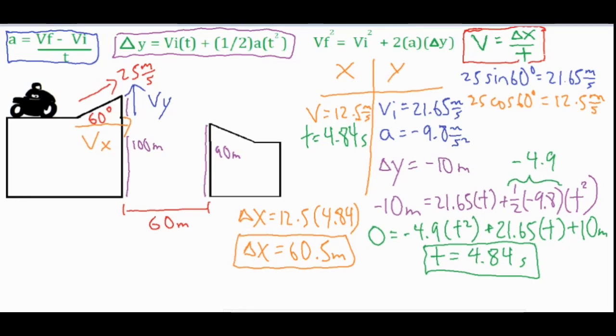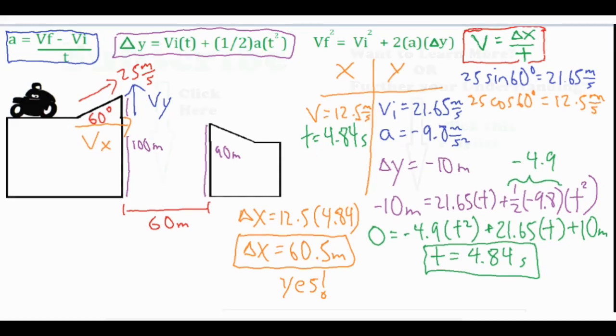Now this time they do actually exceed this 60 meter gap. Our delta x is going to be a little bit greater, so this one they do land it, they do make it across. The difference in this one was we have to solve for time a little bit differently and use this equation which causes a quadratic or something that you have to graph to find this different time. The time is a little bit longer because the biker does drop that additional 10 meters, so giving it that extra hang time makes a greater delta x. So in this one they do make it. I hope that was helpful to you, thank you for watching and listening.